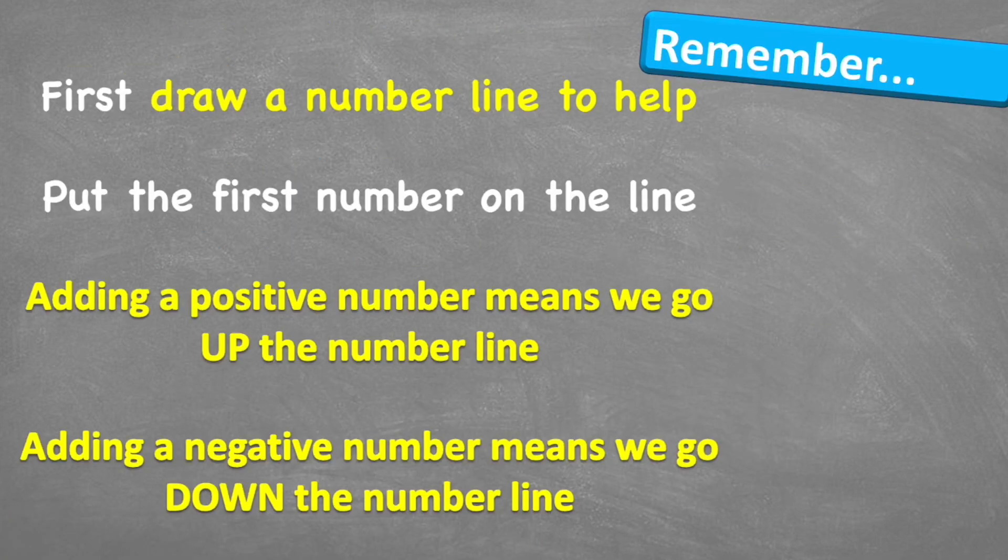That is adding positive and negative numbers. Let's think about what to remember. First, we need to draw a number line to help us. Then we're going to put the first number on the line and then we're going to remember our two rules. Adding a positive number means we go up the number line. Adding a negative number means we will come down the number line.